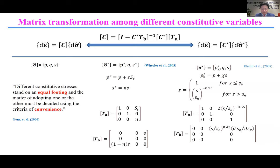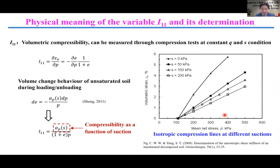For example, the model proposed by Gallipoli et al. in 2003, which used Bishop's stress and modified suction, and the model by Professor Khalili and his co-author, can both be converted to the unified framework by matrix transformation. Let me now introduce and explain the physical meaning of each variable I-ij and how it is measured in experiments.